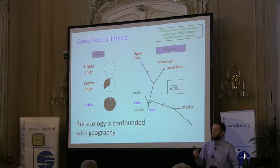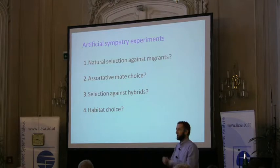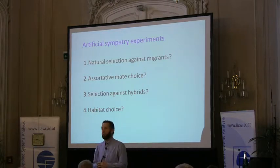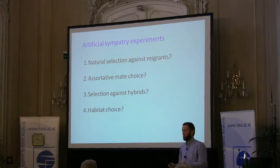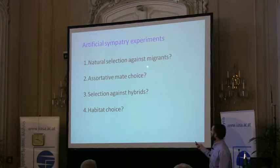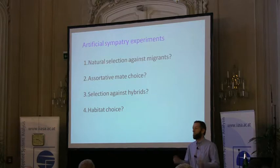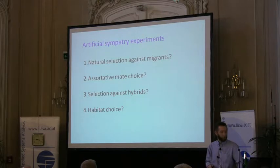The problem with inferring whether this is ecologically-driven reproductive isolation is that ecology is confounded with geography - they're in different ecological environments and different places. So you can't be sure whether the reproductive barriers limiting gene flow are ecologically driven. One way to get further insight is to create artificial sympatry: bring them together and ask whether reproductive barriers driven by ecological differences persist when you remove geographical separation. We'd expect to see selection against migrants, assortative mate choice, selection against hybrids, and habitat choice.